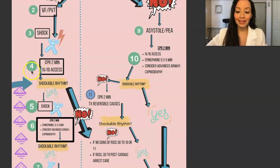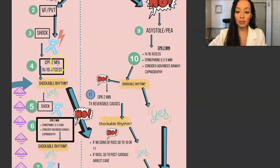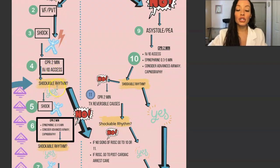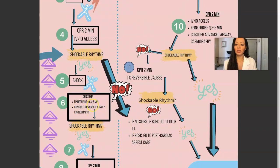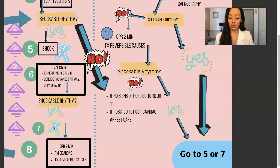That's step three — you shock them. Step four, you do CPR for two minutes and establish IV or IO access, intravenous or intraosseous access. Is it a shockable rhythm? If it is, you shock again — that's five. Then step six, CPR for two minutes, epinephrine every three to five minutes, consider advanced airway and capnography. If it is a shockable rhythm, you shock them again — that's seven.